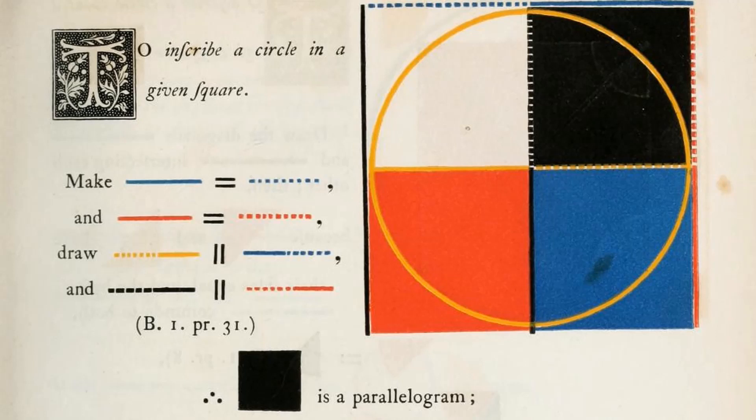What I personally love about Byrne's 1847 edition of Euclid's Elements is that it uses the elements of art — the foundations from which all pictures are created: colours, shapes and lines — to relay its information. Byrne, in fact, goes one step further and only uses the primary colours, blue, yellow and red, the colours from which all others are made.